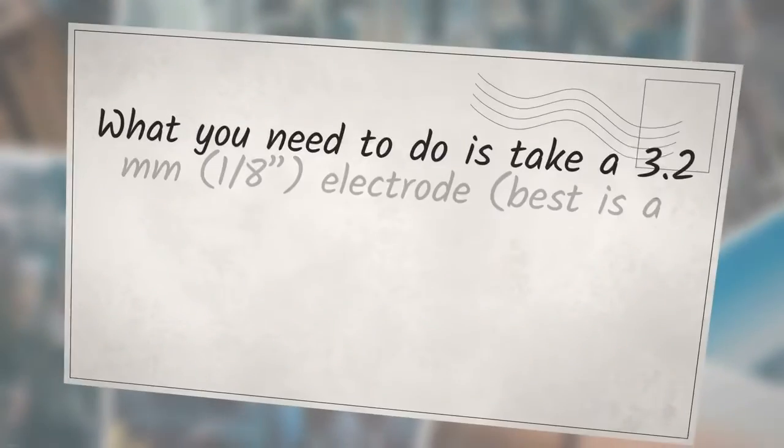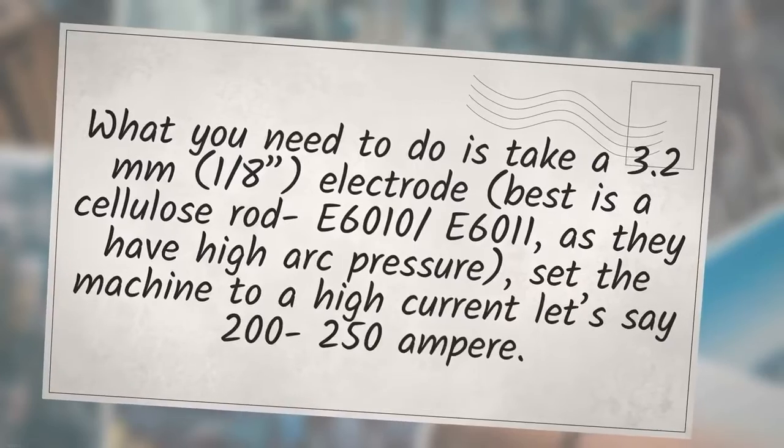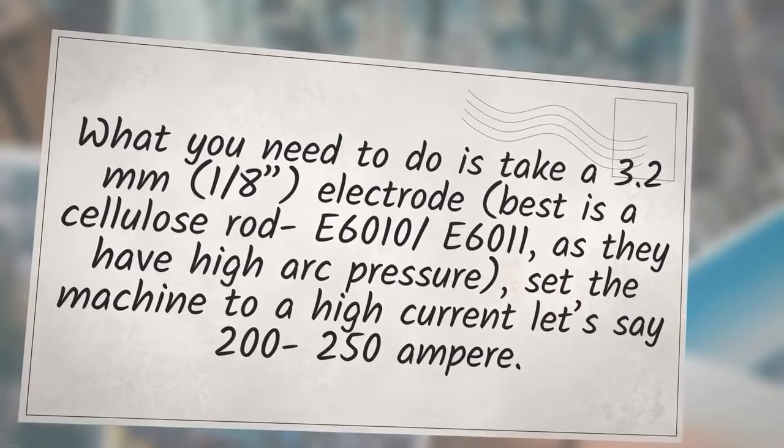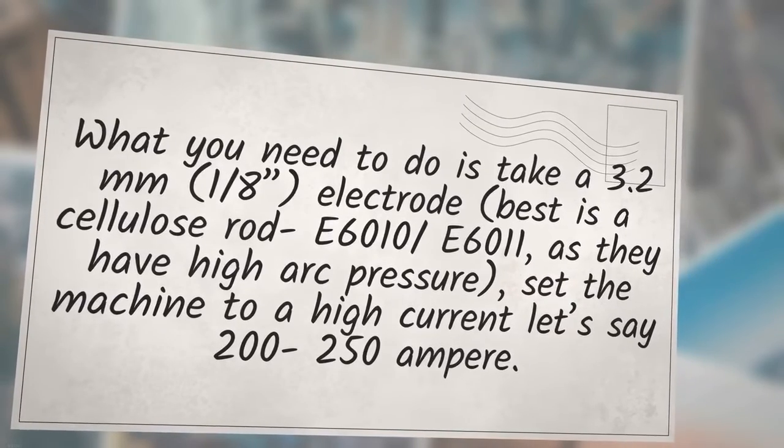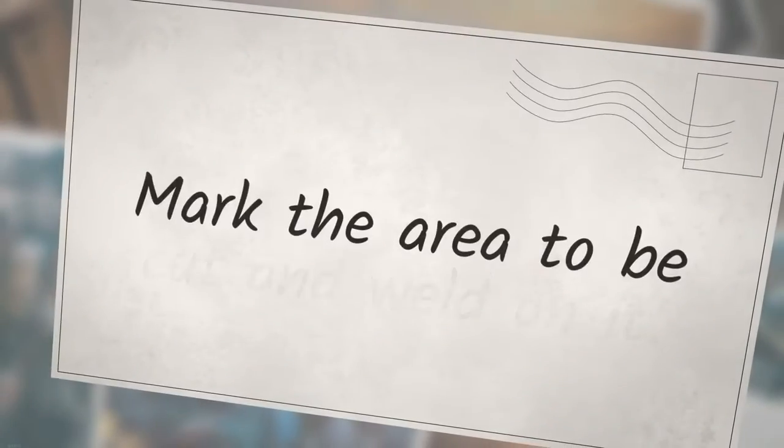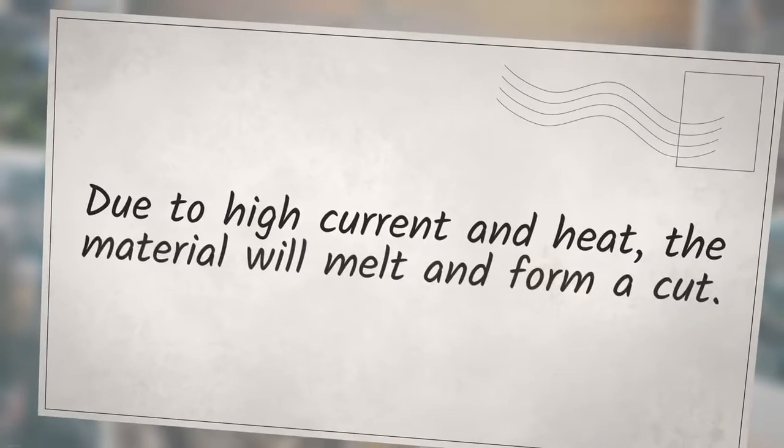What you need to do is take a 3.2 mm electrode, best as a cellulose rod E6010-E6011, as they have higher pressure, set the machine to a high current let's say 200-250 ampere. Mark the area to be cut and weld on it. Due to high current and heat, the material will melt and form a cut.